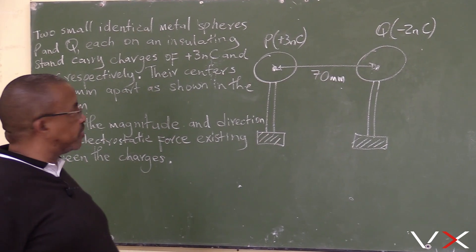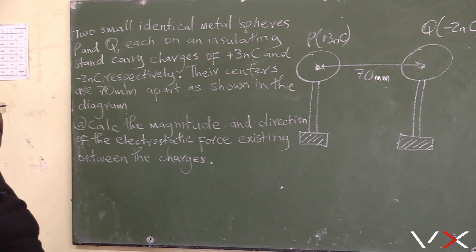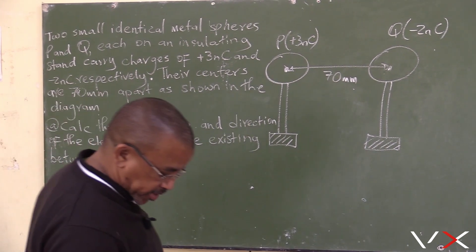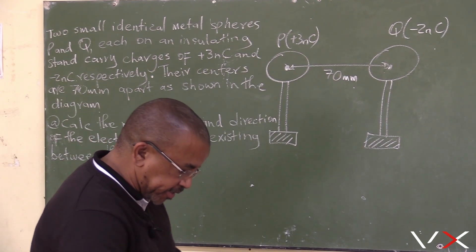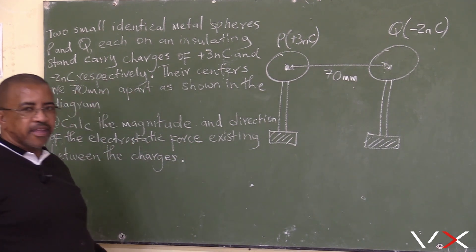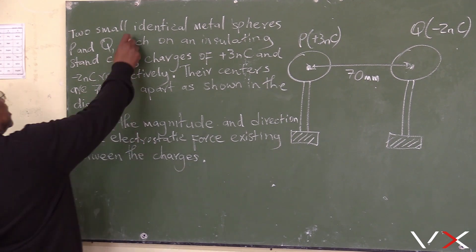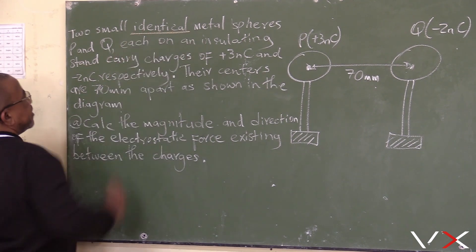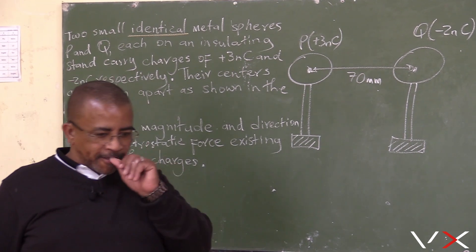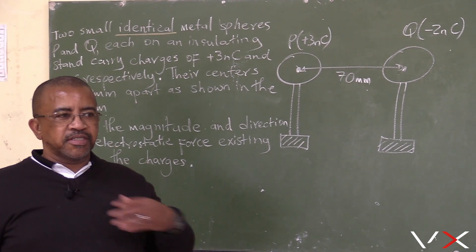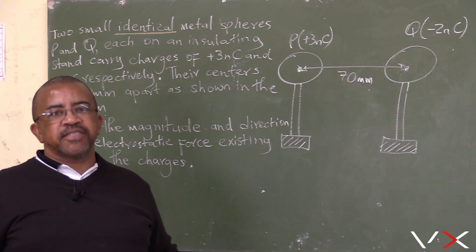Here we are given two small identical metal spheres. Let us look at a very interesting word here: identical. For electrostatic force problems, the spheres that we use should be identical. They are placed on an insulating stand, which does not allow charge to flow away.